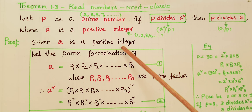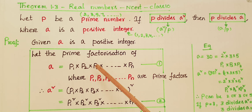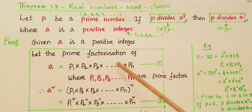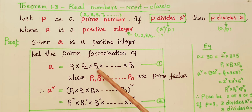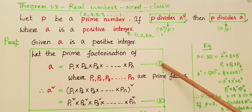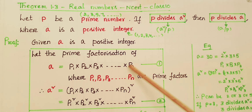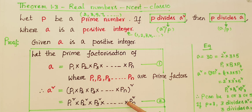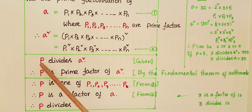Given that a is a positive integer, by the Fundamental Theorem of Arithmetic, any composite number can be expressed as a product of prime factors. So we write a as p1 × p2 × p3 × ... × pn — this is the first equation, where p1, p2, p3, ..., pn are prime factors. Squaring both sides, a squared equals p1 squared × p2 squared × p3 squared × ... × pn squared. This is the second equation.